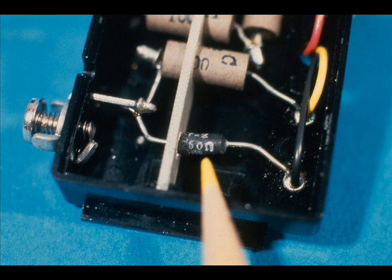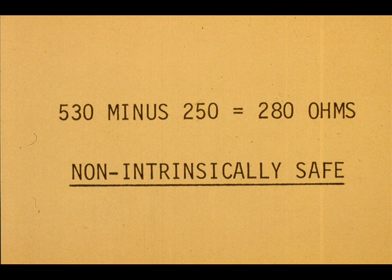A Veritrac receiver contains 250 ohms of signal input resistance. This must be subtracted from the total of 530 ohms. 530 minus 250 leaves 280 ohms allowable signal wire resistance. This is for a non-intrinsically safe receiver.